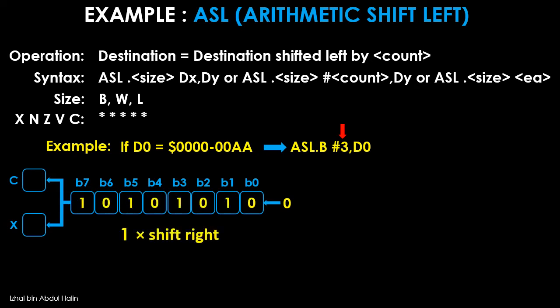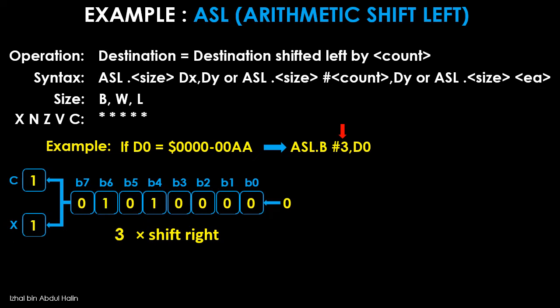The first shift to the left is executed, causing each bit to move one bit to the left. The C and X flags receive data shifted from the MSB of register D0. This shifting process is repeated three times. At the end of the first shift, D0 contains 01010100, and the C and X flags are both 1. The second shift results in D0 equals 10101000, and C and X are both 0. The final shift causes D0 to be 01010000, and C and X are both 1.